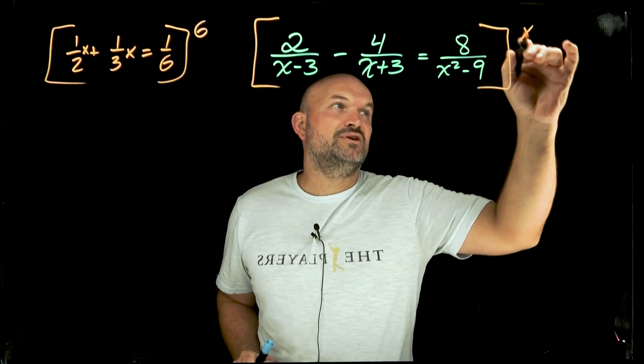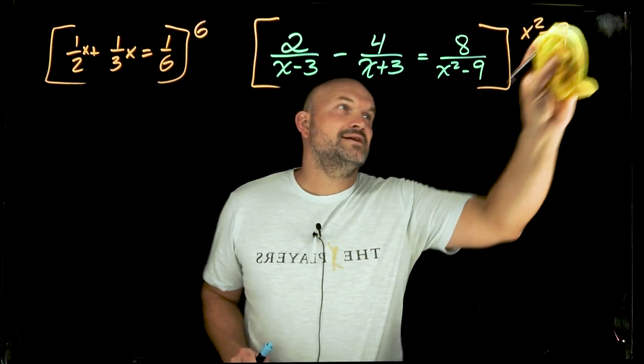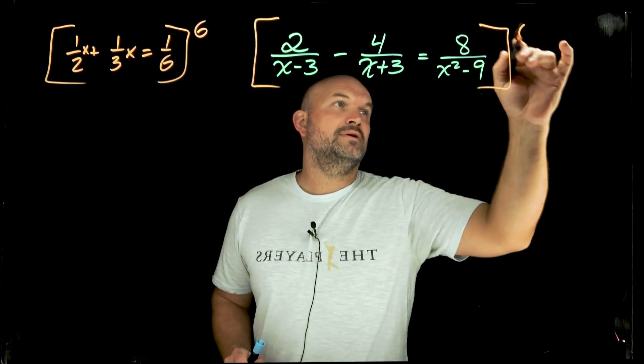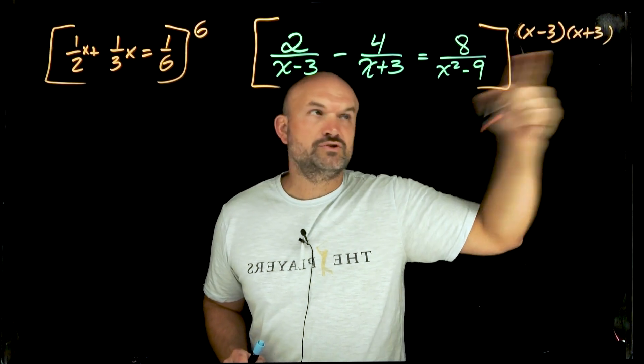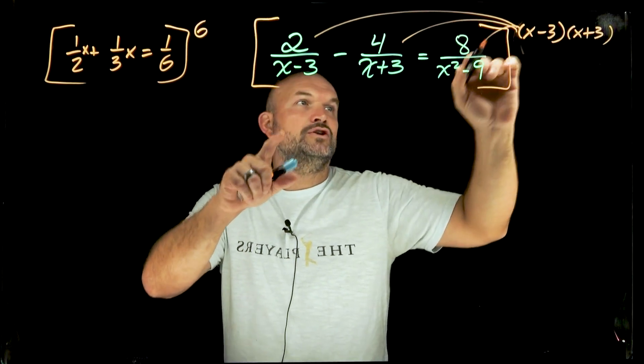And then you recognize here, yeah, I just need to multiply by x squared minus nine. Now, you could write it like that, or you might actually prefer to write it out in the factored form, x minus three times an x plus three. But hopefully you know the difference of two squares, that's x squared minus nine. So I'm going to multiply this times every single term.